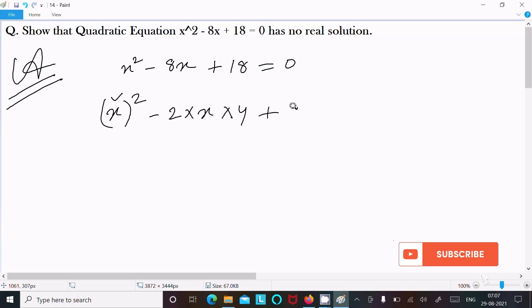Now b square that is 4 square. So 4 square is 16 and here 18 is there. So we can write 2 equal to 0. So 16 plus 2 is 18.